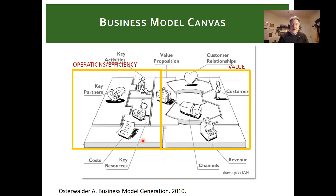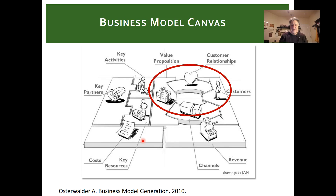Lack of cash flow or poor cash flow is probably one of the top reasons why businesses go out of business. A critical concept is the relationship between the customer and the value proposition — from the Value Proposition Canvas. This is the first step in the journey: really understanding who the customer is and what value you are bringing through your product or service.